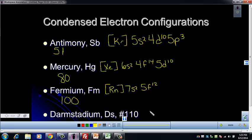Now, darmstadium is number 110. I gave that one to you because on your reference table, it doesn't have the symbol. Again, the previous noble gas is radon. After that, we're in row 7, so it's 7s2.